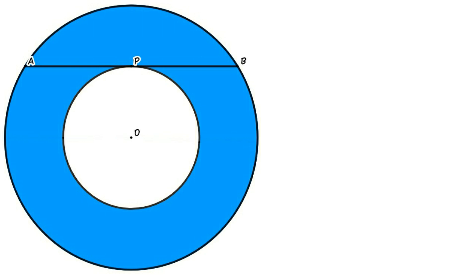Angle OPB equals 90 degrees because AB is tangent to the smaller circle, and P is the midpoint of AB.